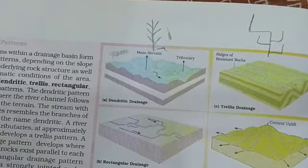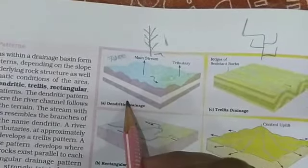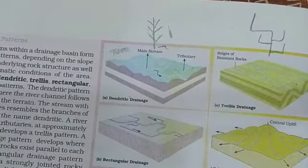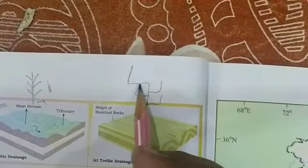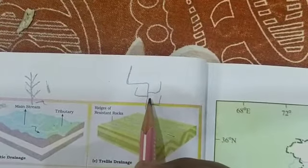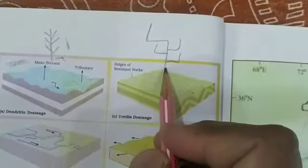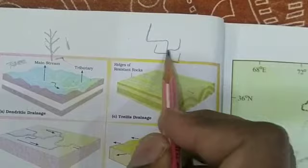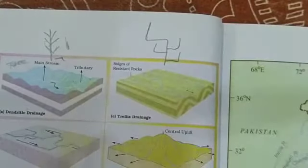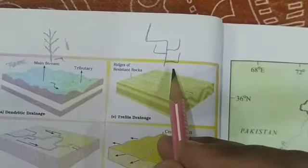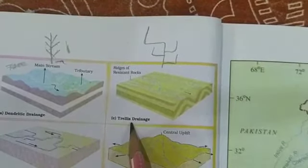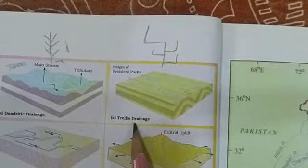The second is rectangular drainage. What happens here is that the tributary rivers meet the main river at 90 degrees — a completely rectangular shape — so we call it the rectangular drainage pattern. The third is trellis drainage.